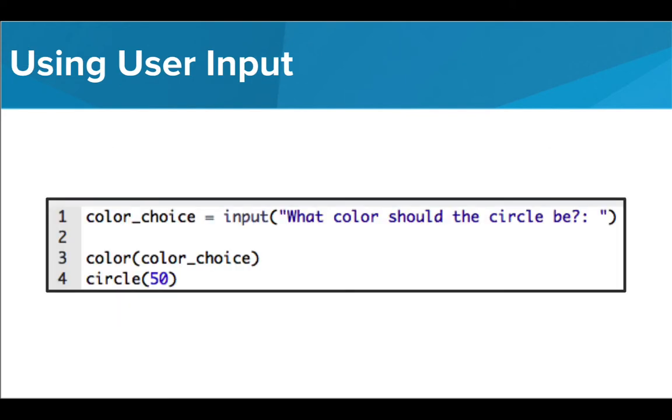In this code, we are asking the user to determine what color our circle should be. We've named the variable color_choice and are asking the question, what color should the circle be? We are then using this variable's value to assign a color to Tracy before she draws the circle.